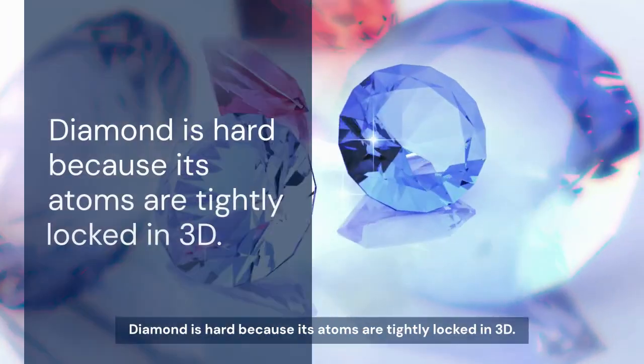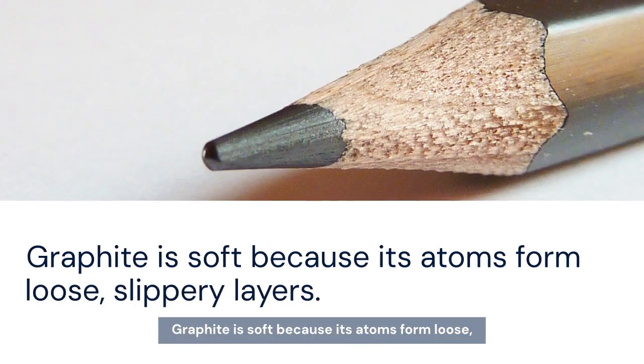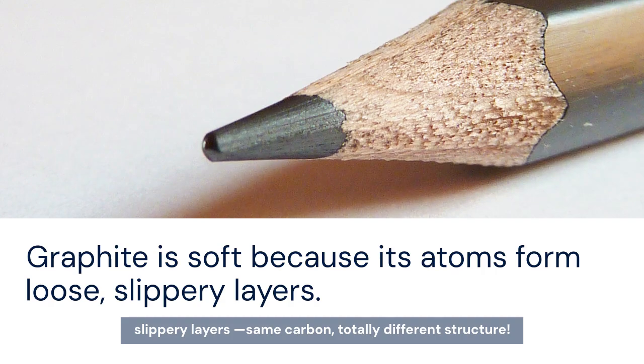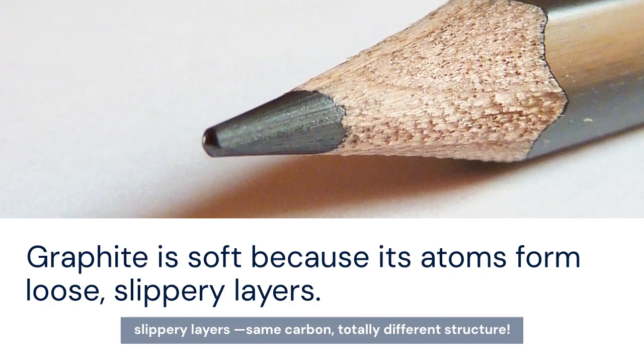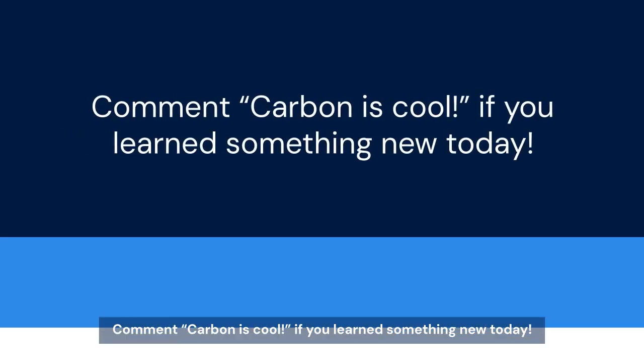In short, diamond is hard because its atoms are tightly locked in 3D. Graphite is soft because its atoms form loose, slippery layers. Same carbon, totally different structure. Subscribe to Stellar Science Knowledge for more science surprises. Comment 'Carbon is cool' if you learned something new today.